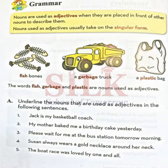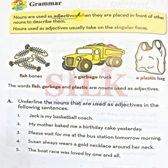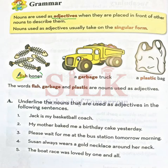Now open your book, page number 12. Page number 12 pe aapki adjectives hain. Adjectives kisko describe karte hain? Noun ko describe karte hain. Jaisi yahan par dekhi examples mein — look at these pictures: fish bones. Bones kiski bones? Fish ki bones. Toh yahan par 'fish' bones ki kya ho gaya? Adjective ho gaya.